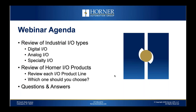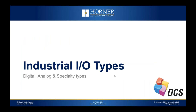Let's dive into industrial I/O. Starting with digital inputs and outputs — these provide on/off status or binary status and control for a variety of devices. On the input side, we're talking photo eyes, limit switches, and push buttons. On the output side, could be motor starters, solenoids, pilot lights — anything with on/off is digital.